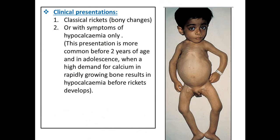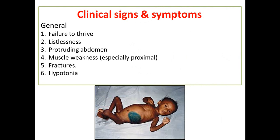What is the presentation? Either there are clinical rickets in the form of bony changes, which is the common presentation, or there are symptoms of hypocalcemia only. This hypocalcemia presentation usually occurs before two years of age and in adolescence, when calcium demand is high due to growing bone. Hypocalcemia can develop even before bony changes appear. General features include failure to thrive, listlessness, protruding abdomen, muscle weakness especially proximal muscles, fracture, and hypotonia.